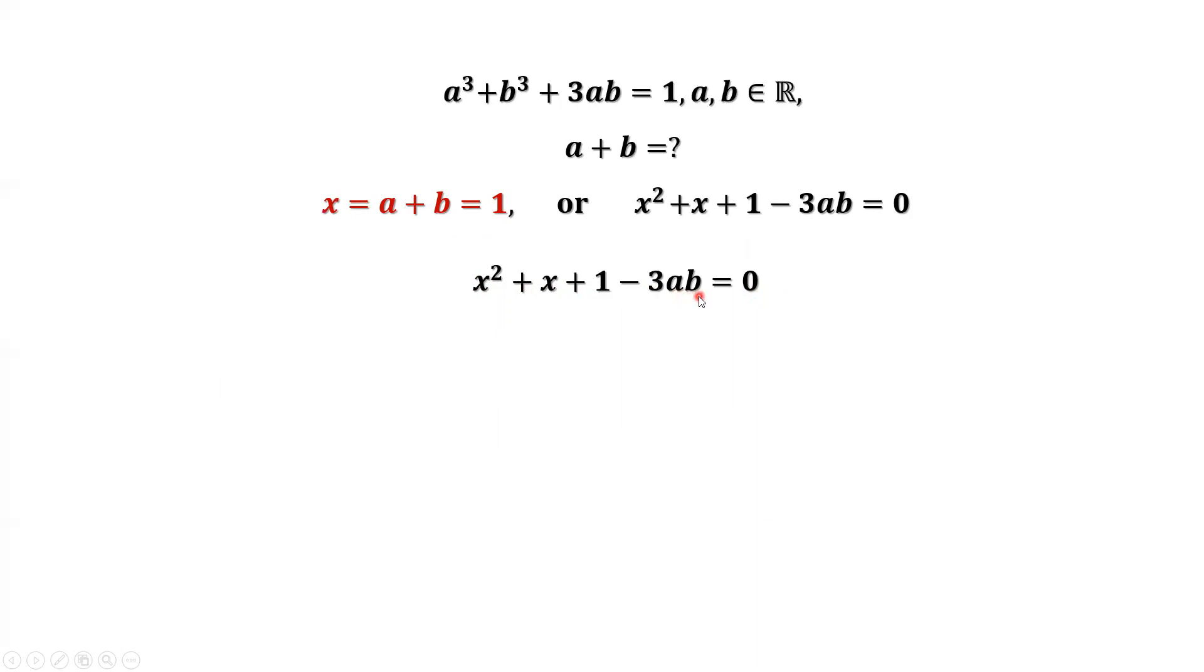Consider x² + x + 1 - 3ab = 0. How to solve this quadratic equation? If a, b are given, no problem. But here, a and b, we don't know. There's no formula to use. How to solve it? We replace x back by a plus b. That's a² + b² + 2ab + a + b + 1 - 3ab. Continue to simplify: a² + b² - ab + a + b + 1.